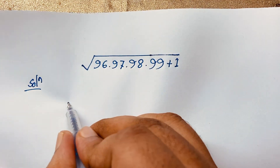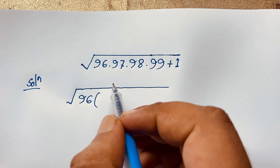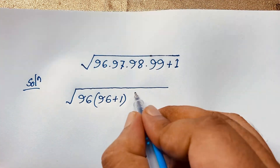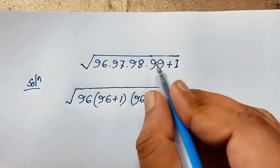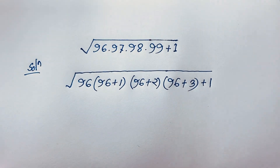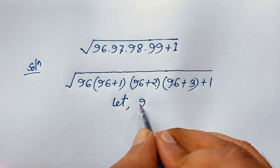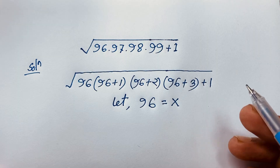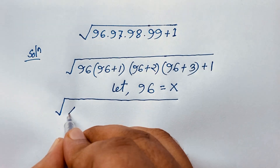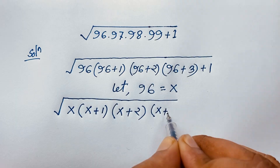I take the square root. Here we have 96, 97, 98, and 99. I rewrite these as 96, 96+1, 96+2, and 96+3. Now let x equal 96. So the expression under the square root becomes x times (x+1) times (x+2) times (x+3), plus 1.